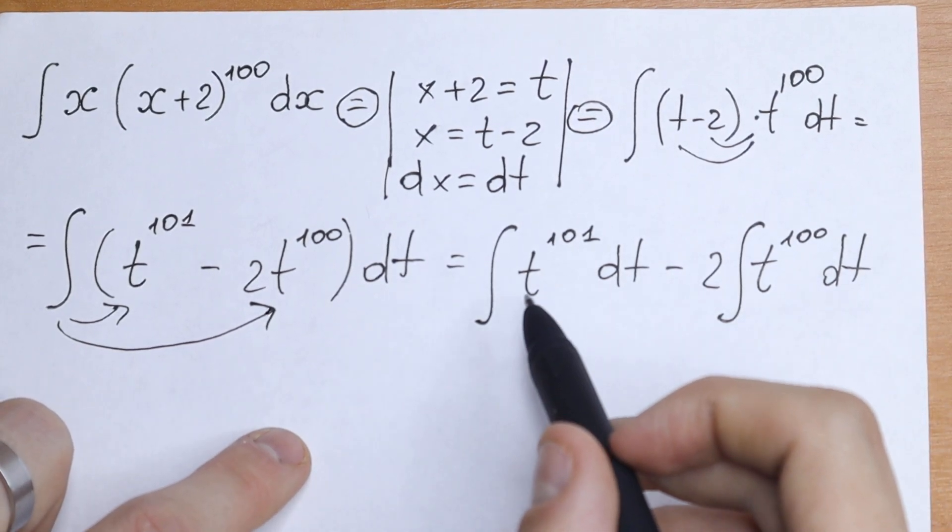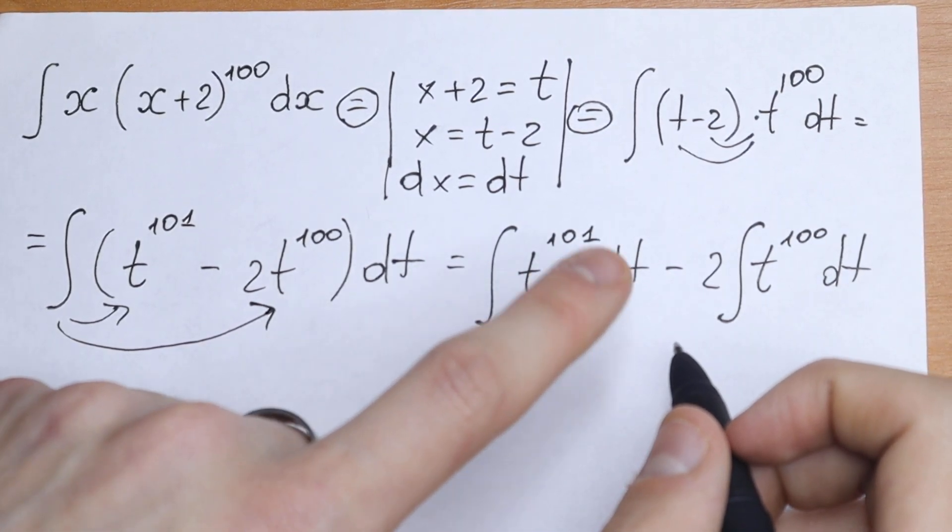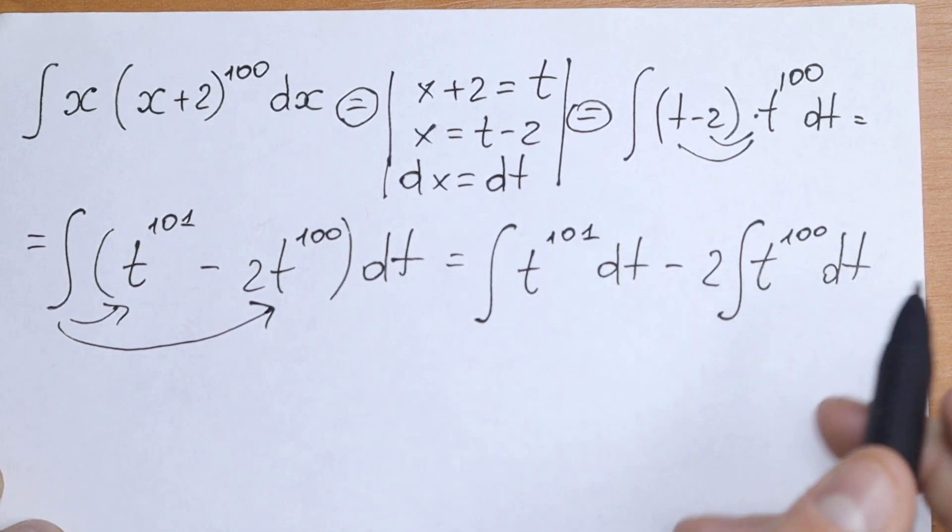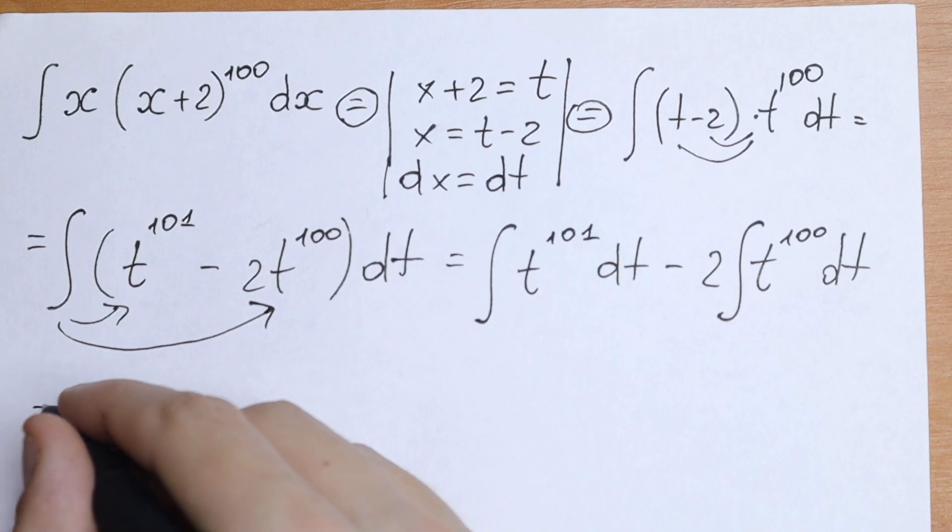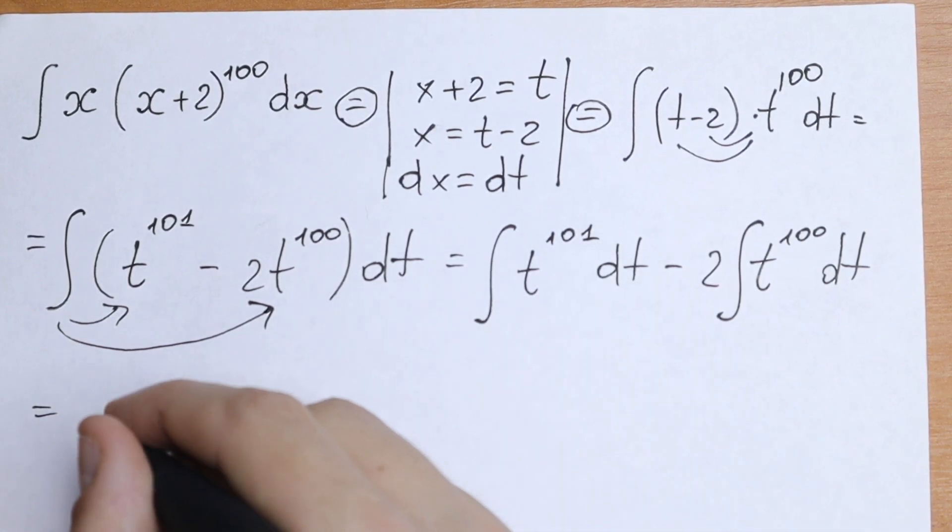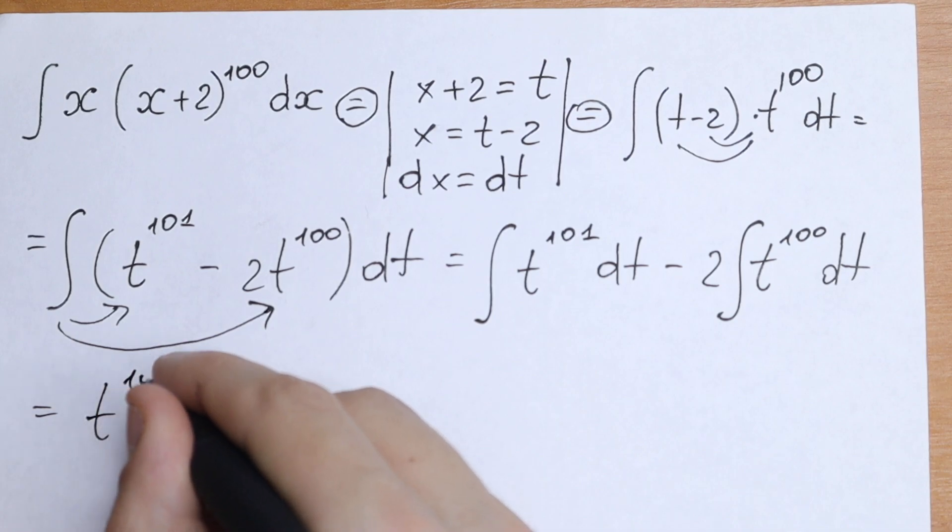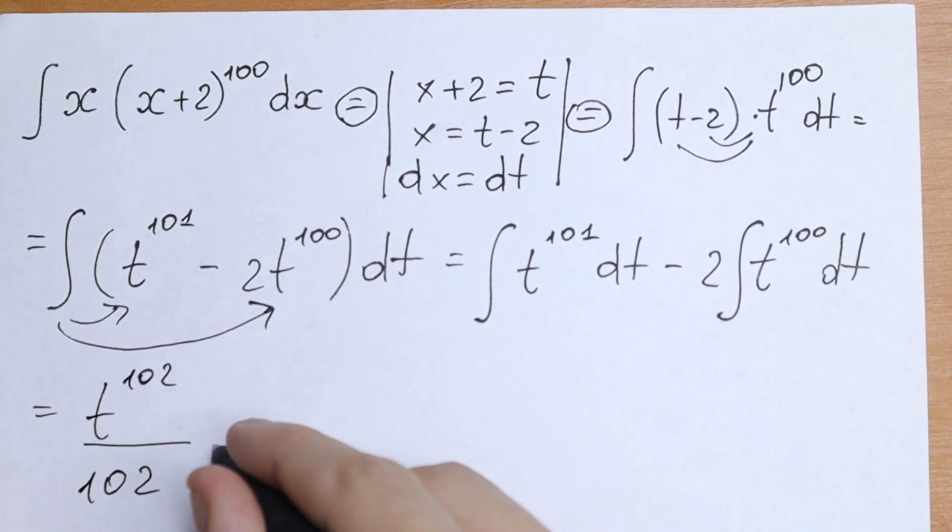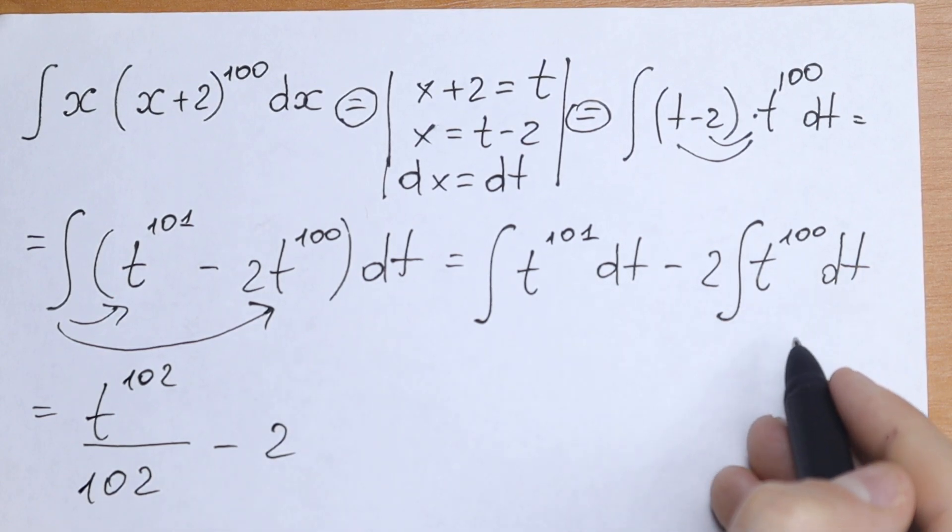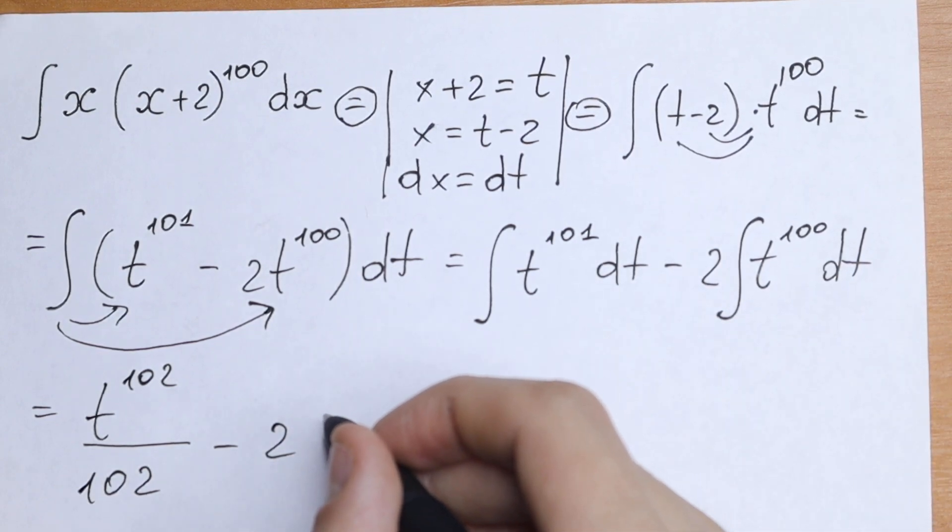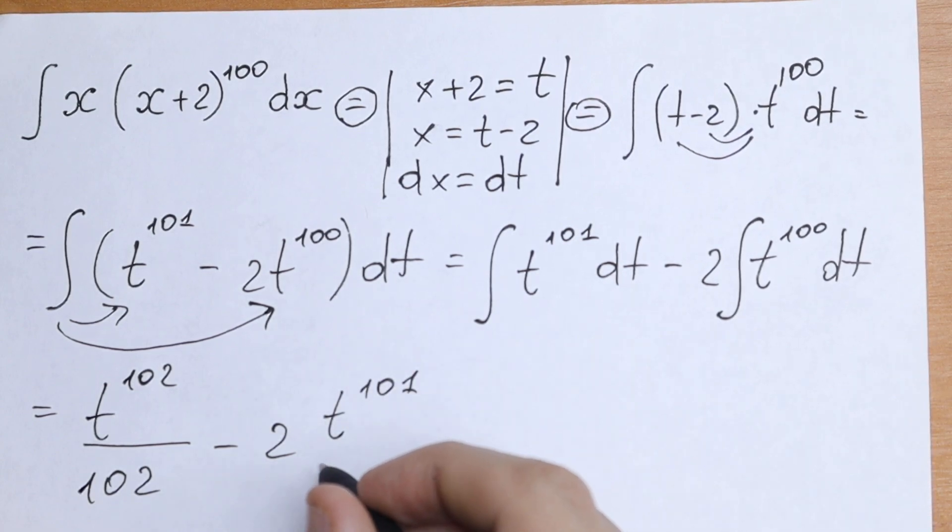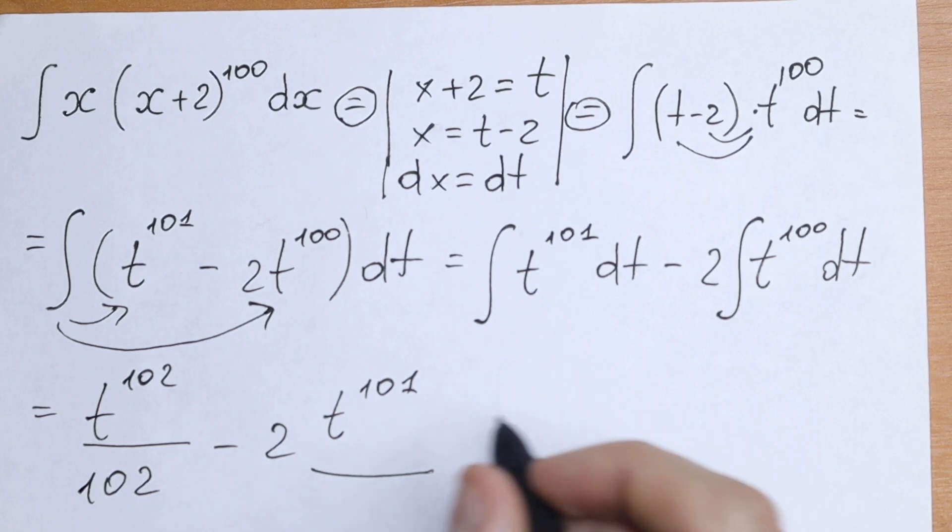And take a look. This is our table case because this is our power rule. We need to add 1 and divide it by this power. As a result we will have t to the power 102 divided by 102, and minus 2... the same thing right here. So add 1 and divide it by this power. We will have t to the power 101 divided by 101.